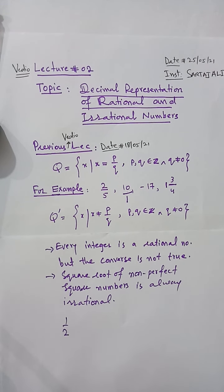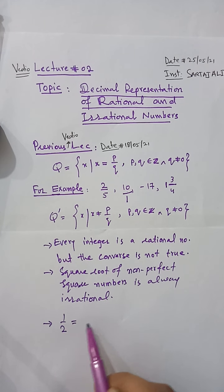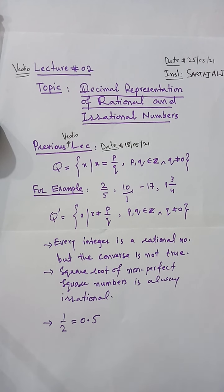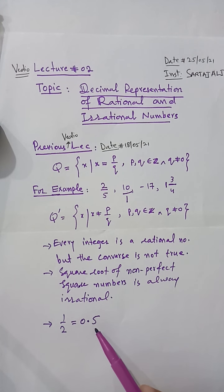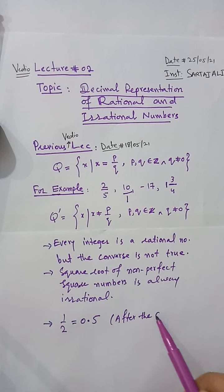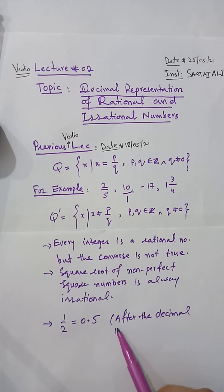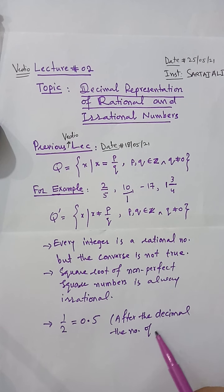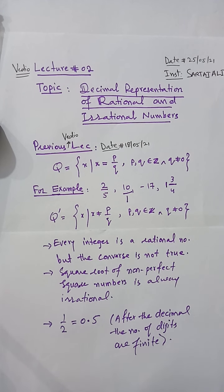In this video lecture we will discuss decimal representation of rational numbers. For example, 1/2 in decimal representation is equal to 0.5. After the decimal point, the number of digits is finite — the decimal terminates.